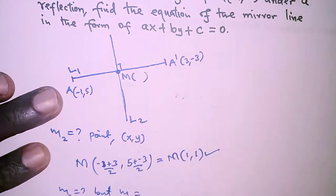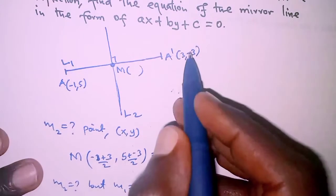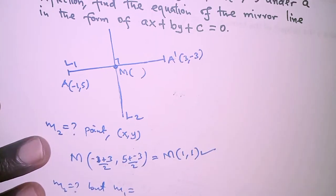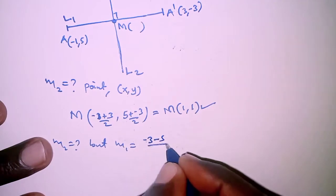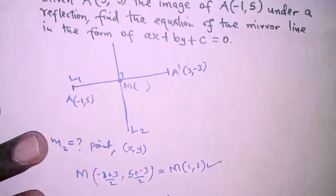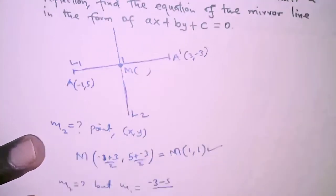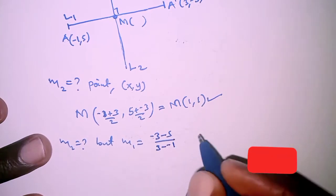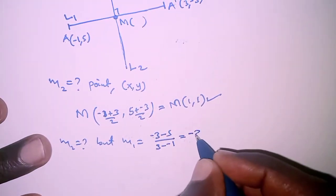So that will be change in y: (-3 - 5) over change in x: (3 - (-1)), which gives us -8/4, and that is -2.